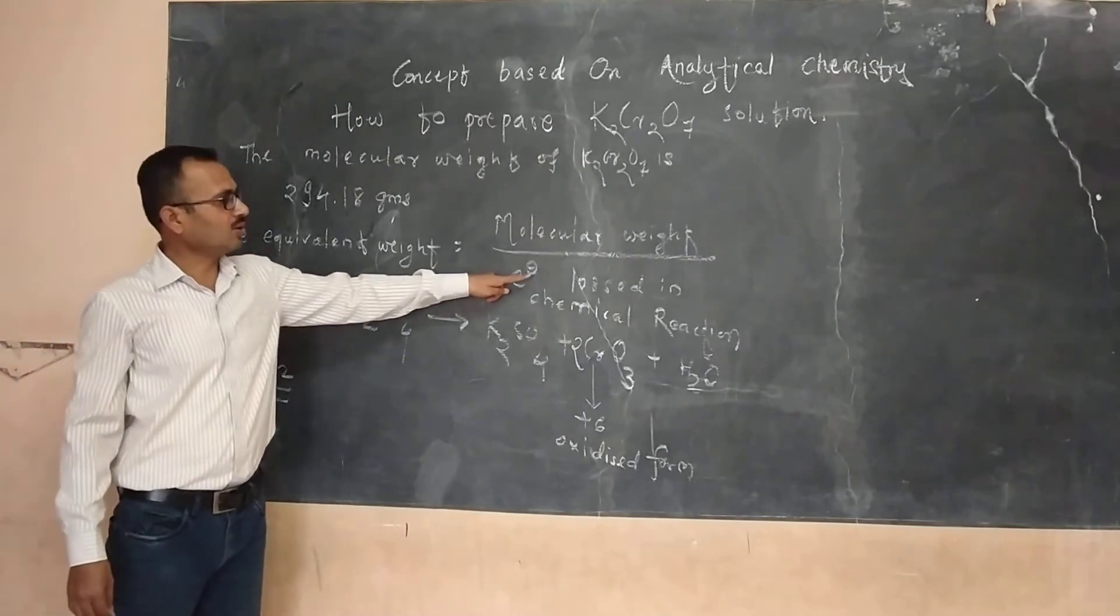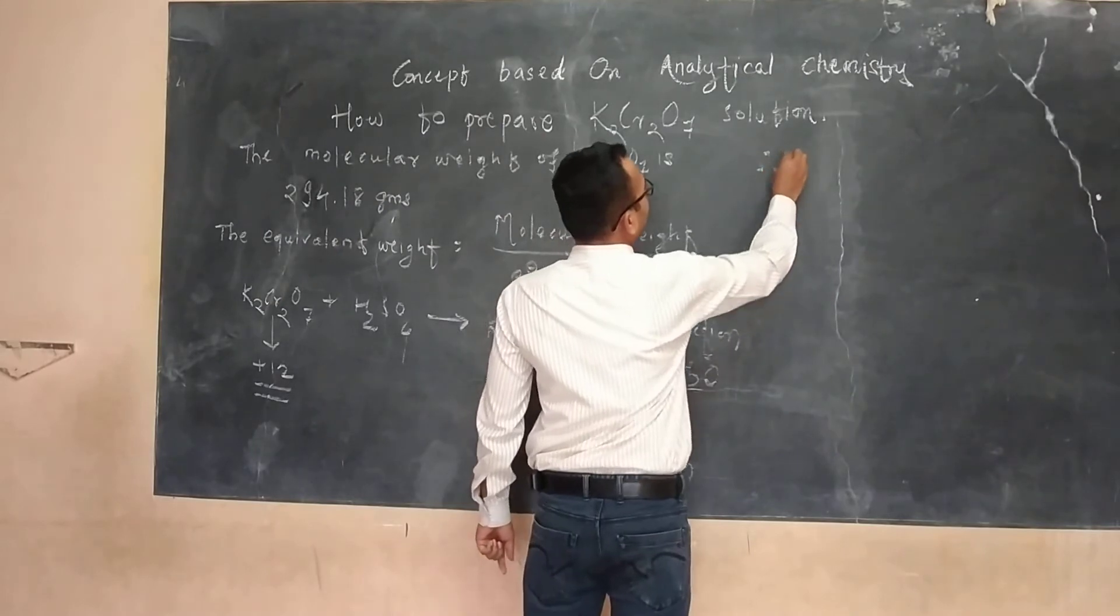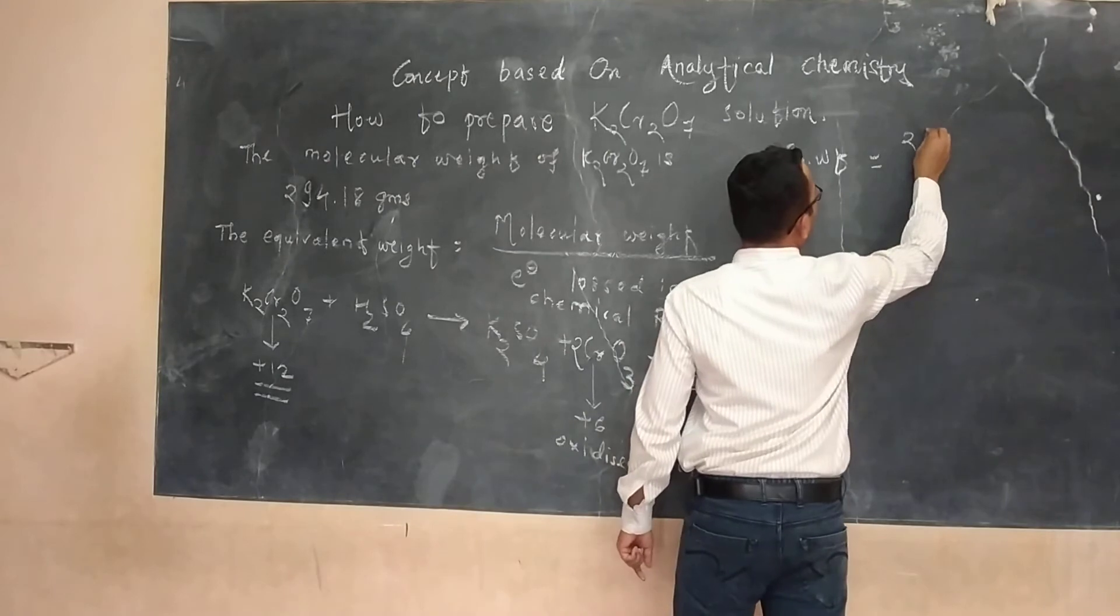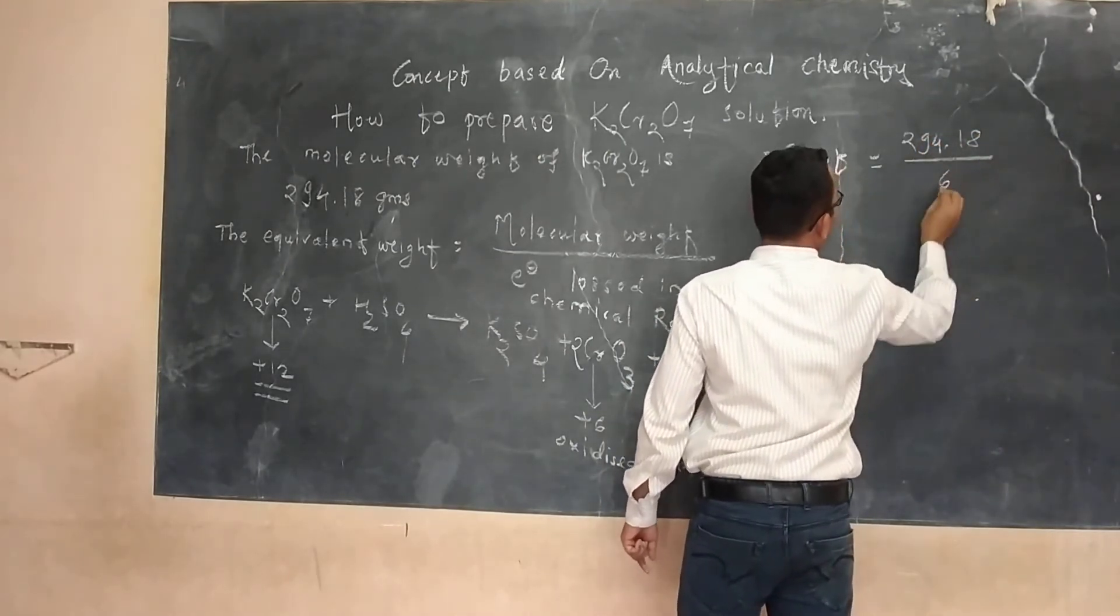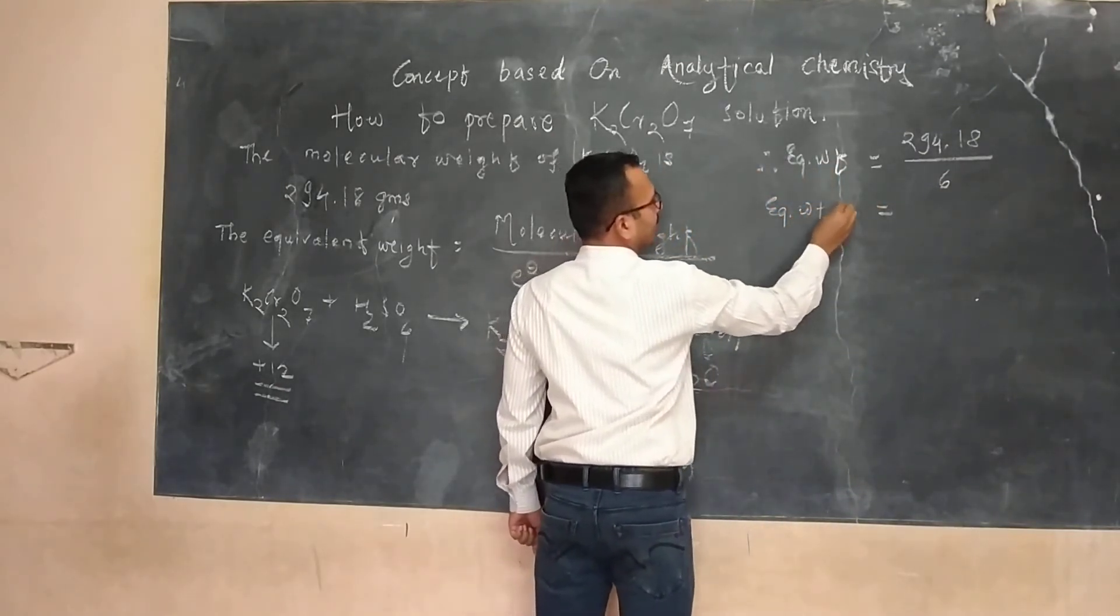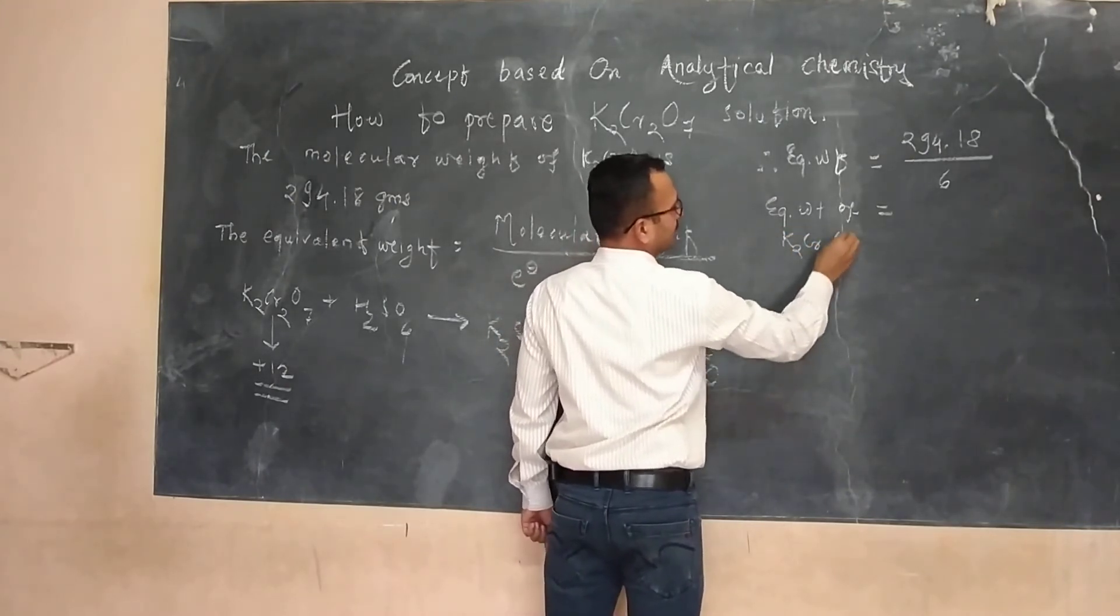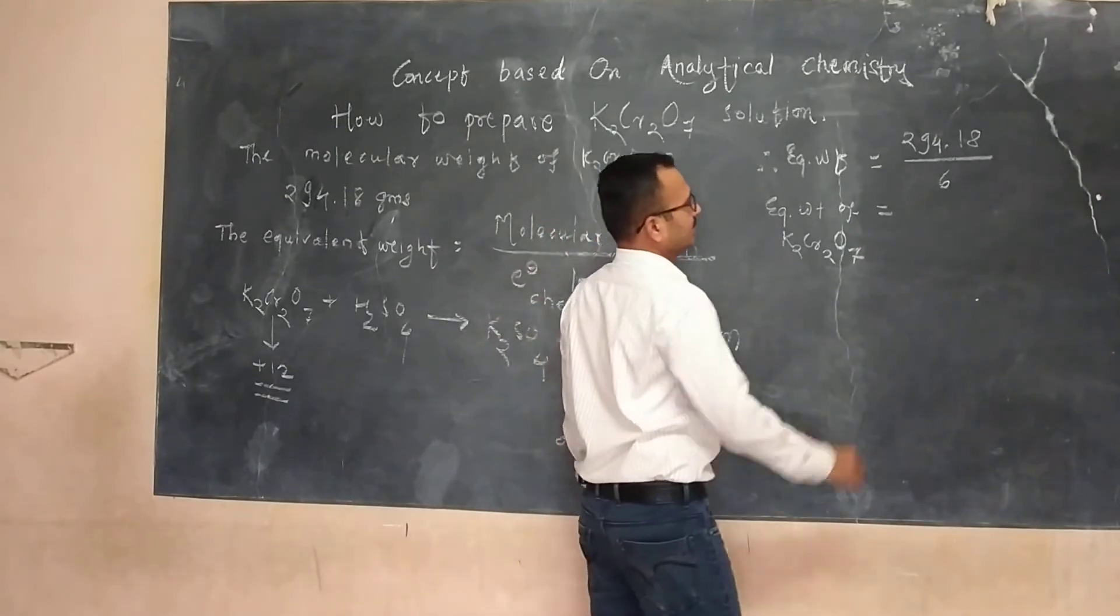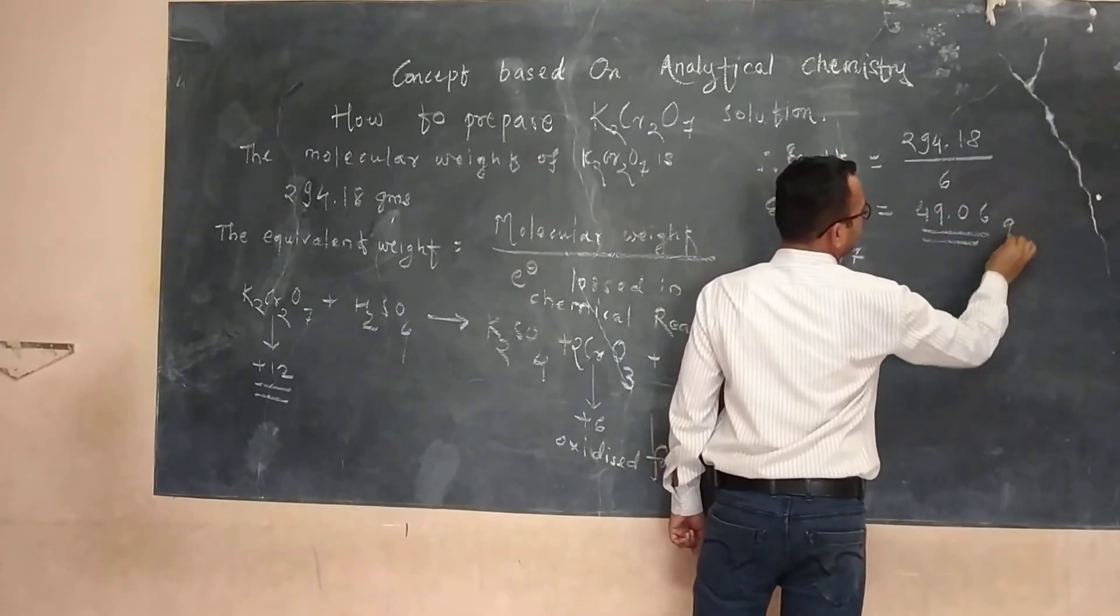If you put this as electron loss in the chemical reaction, therefore equivalent weight is equal to 294.18 divided by 6. So the equivalent weight of potassium dichromate is 49.06 grams.